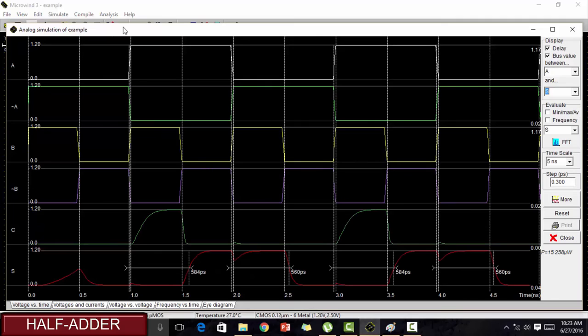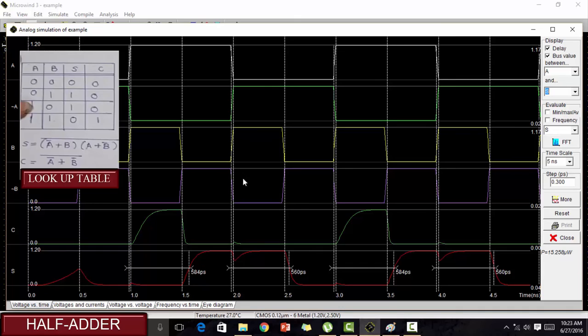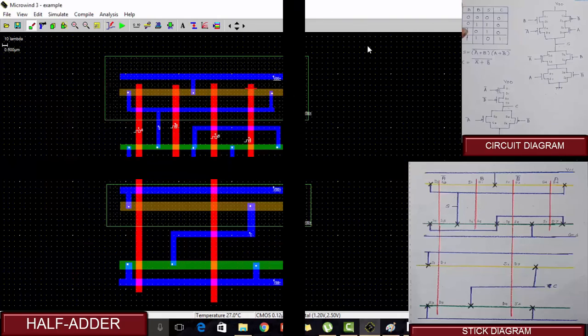Here we can see the output. When A is 0 and B is 1, the carry obtained is 0 and the sum obtained is 1. So it is right according to the lookup table. When A is 1 and B is also 1, the carry is 1 whereas the sum is 0. So this output obtained is correct. So now this is all about half adder. Thank you.